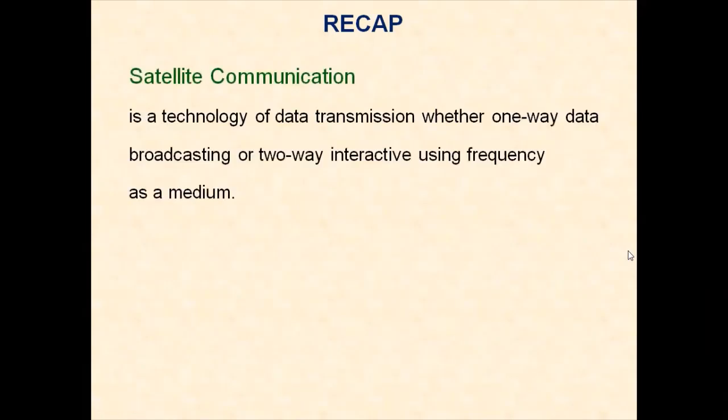Recap: In the last class we studied other types of antennas like DTH antennas, such as a parabolic dish which is most widely used for satellite communication. Satellite communication is a technology of data transmission, whether one-way data broadcasting or two-way interactive, using frequency as a medium. We can make use of microwave frequencies — for uplink we have 6 GHz and for downlink we have 4 GHz.